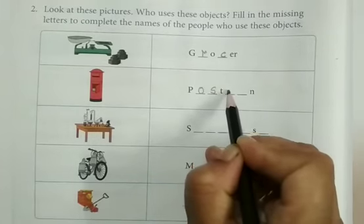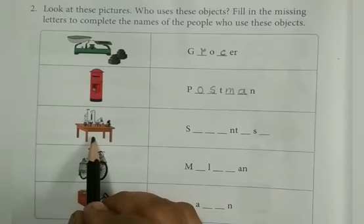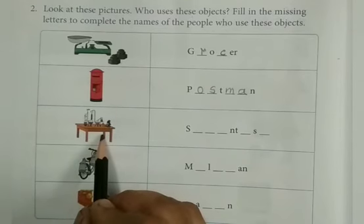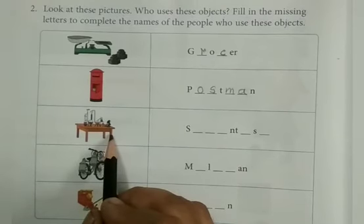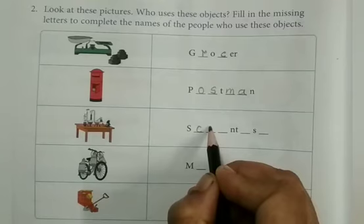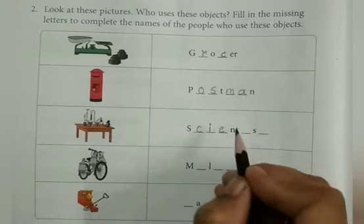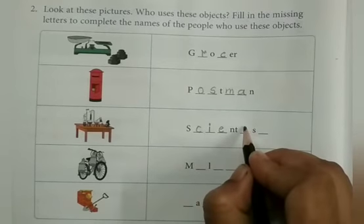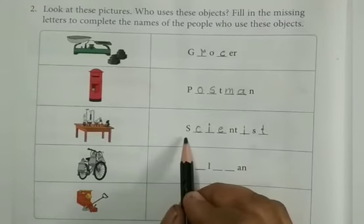Now see this picture. Here are few objects which are useful in research. Right. So who will use this? Yes, you are correct. Scientist. Write the spelling: S-C-I-E-N-T-I-S-T. Again I will repeat the spelling: S-C-I-E-N-T-I-S-T, scientist.